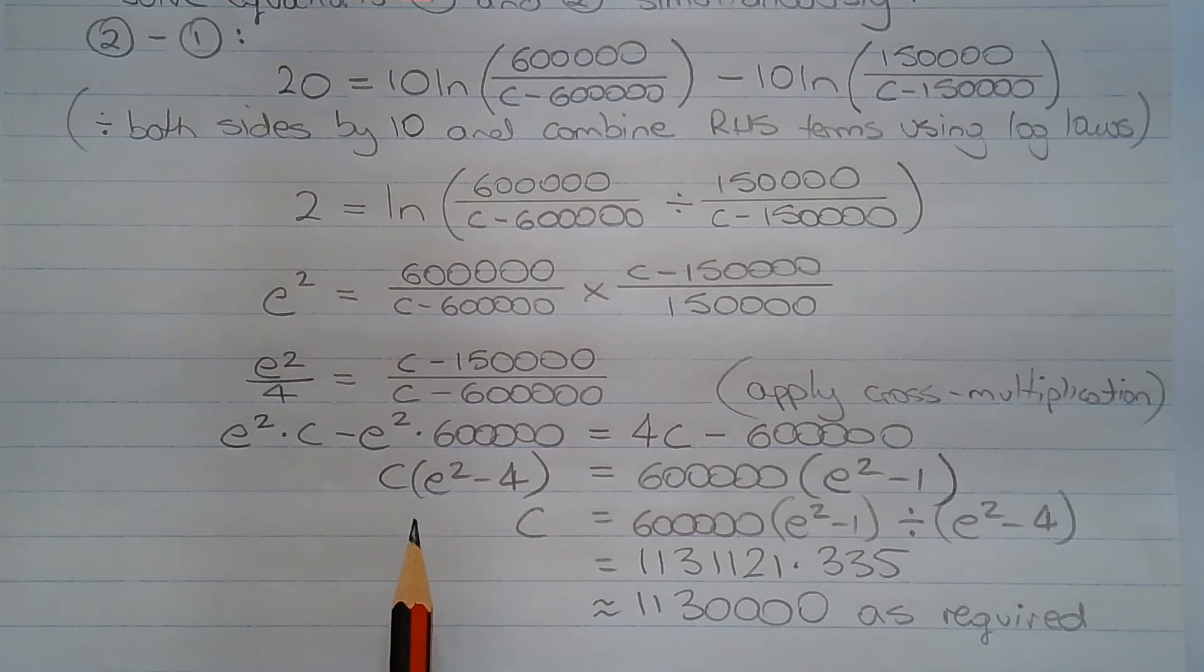Taking the terms involving c over to the left hand side and factorizing out c, we get c(e squared minus 4) equals 600,000(e squared minus 1). So the terms not involving c are taken over to the right hand side.